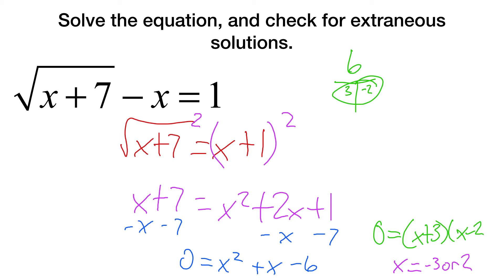Now what we're going to do is just check for extraneous solutions. Our first one we do is negative 3, the square root of negative 3 plus 7 is 4, minus negative 3, so plus 3 equals 1. That's 2 plus 3 is 1. That means 5 is 1. So it's not negative 3 for sure.